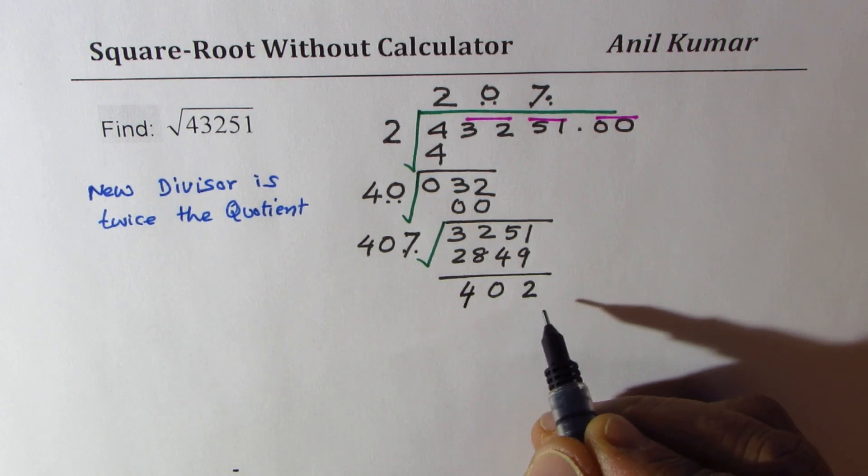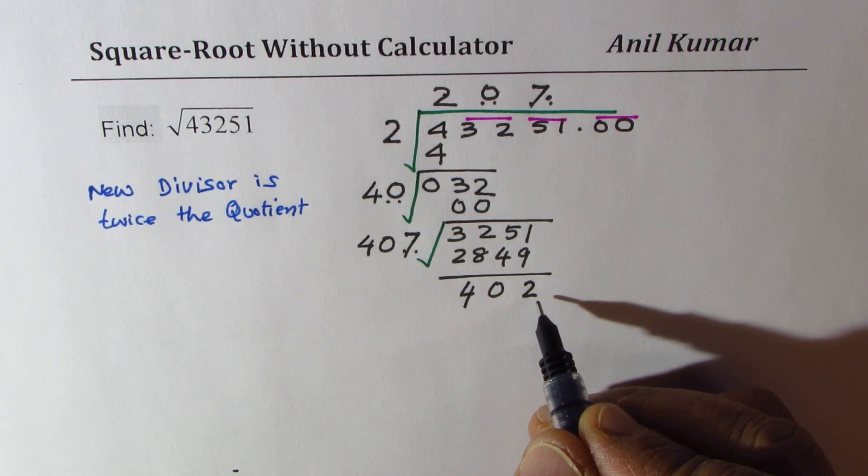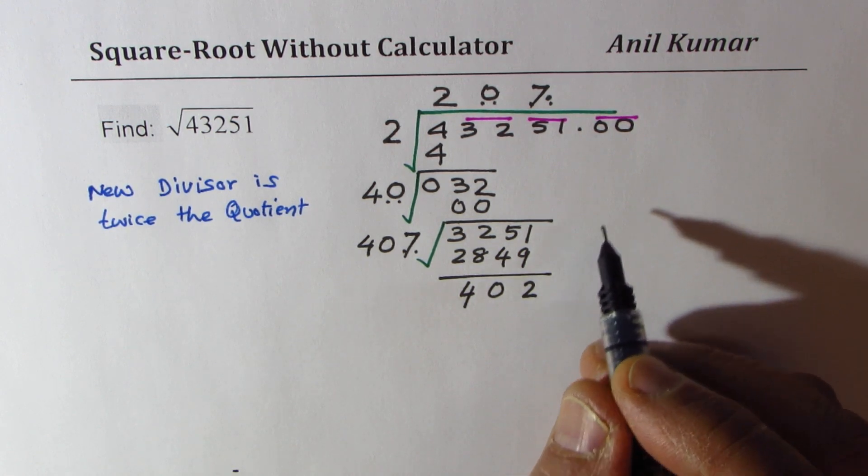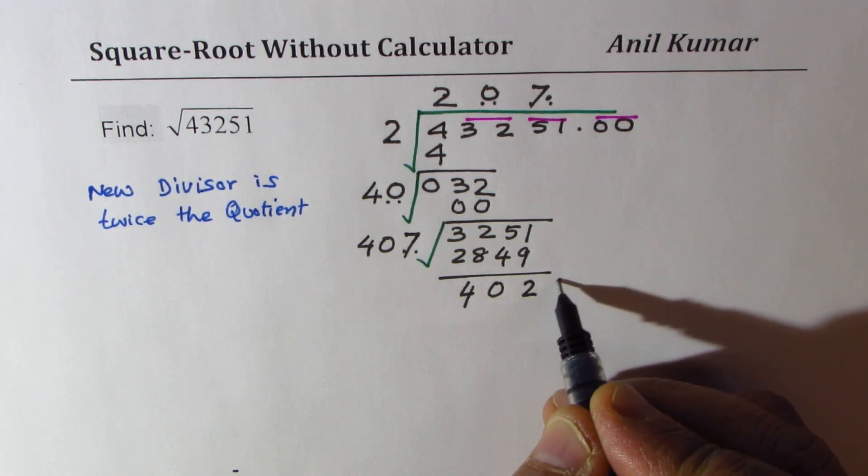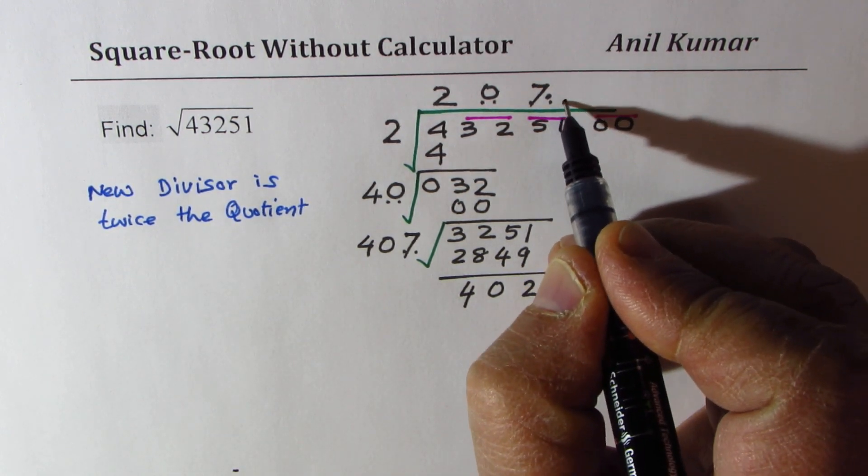So we get 402. And now we are going to bring down the next number which is 00. Now this number comes after a decimal place, so we are going to put a decimal here.